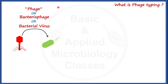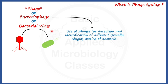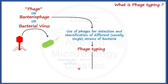Now we are going to talk about our today's topic of discussion, that is phage typing. The use of phages — or bacteriophages or bacterial viruses — for detection and identification of different strains of bacteria, usually single strains of bacteria, is called phage typing. Phage typing is actually a kind of phenotypic method offering detection and identification of different strains of bacteria.